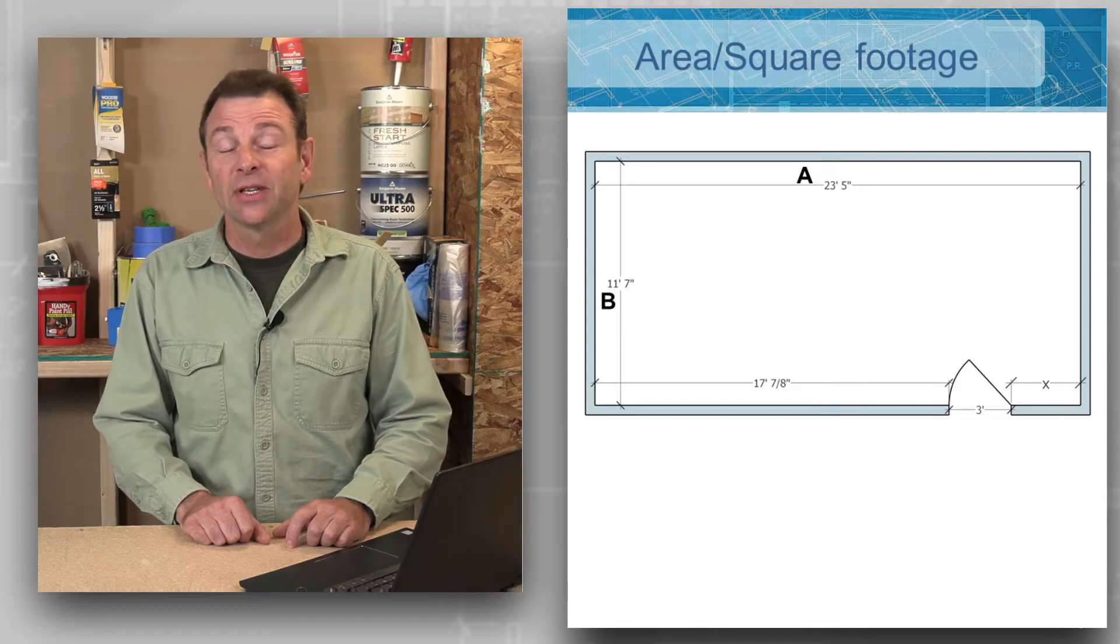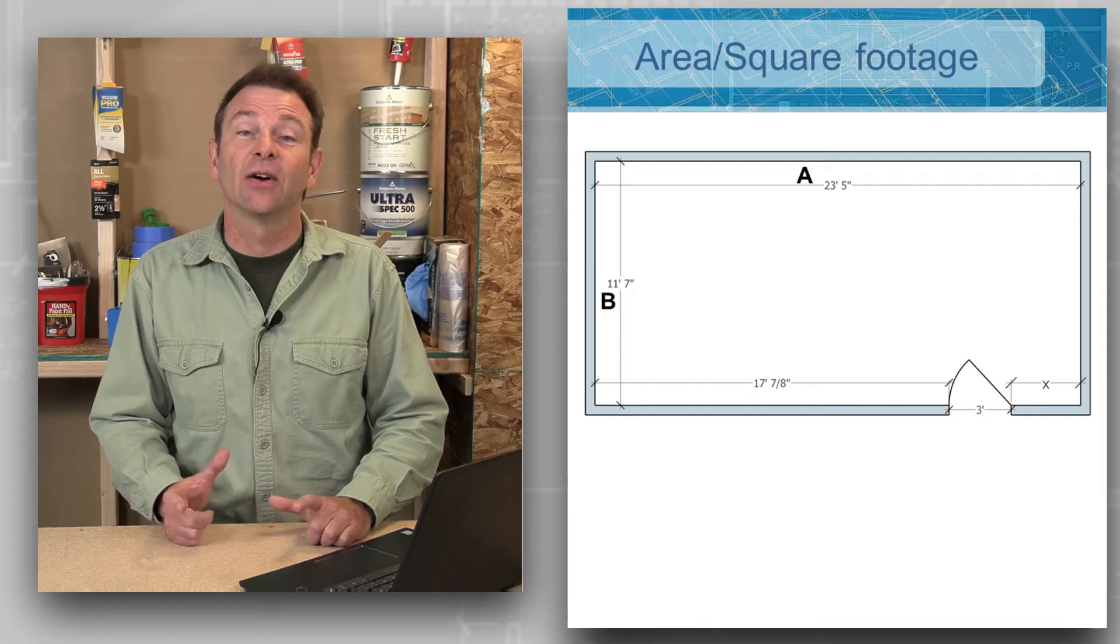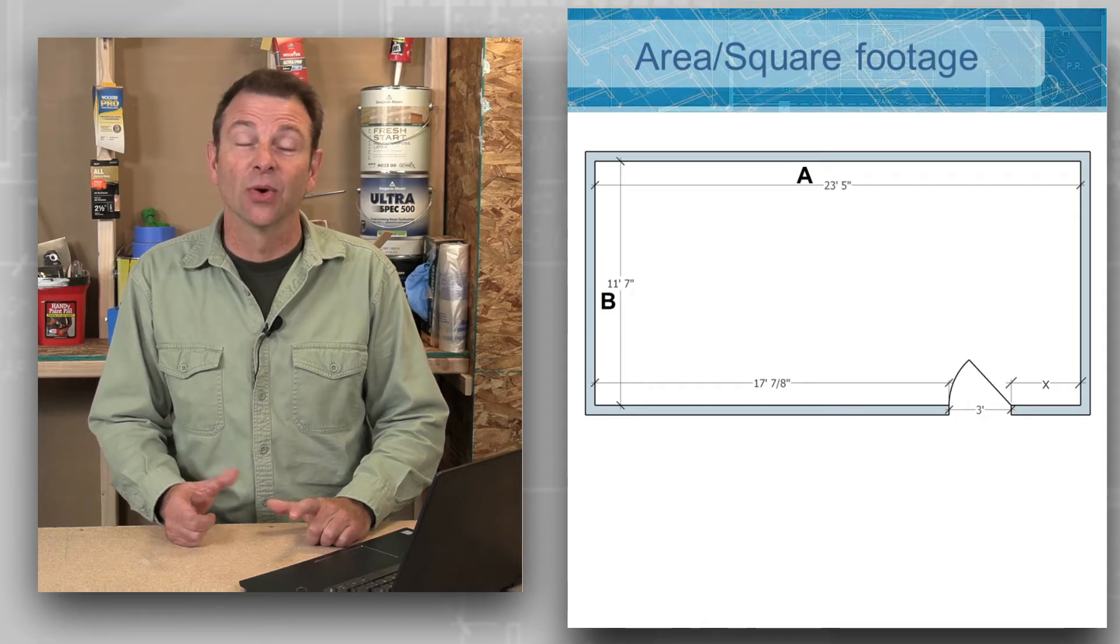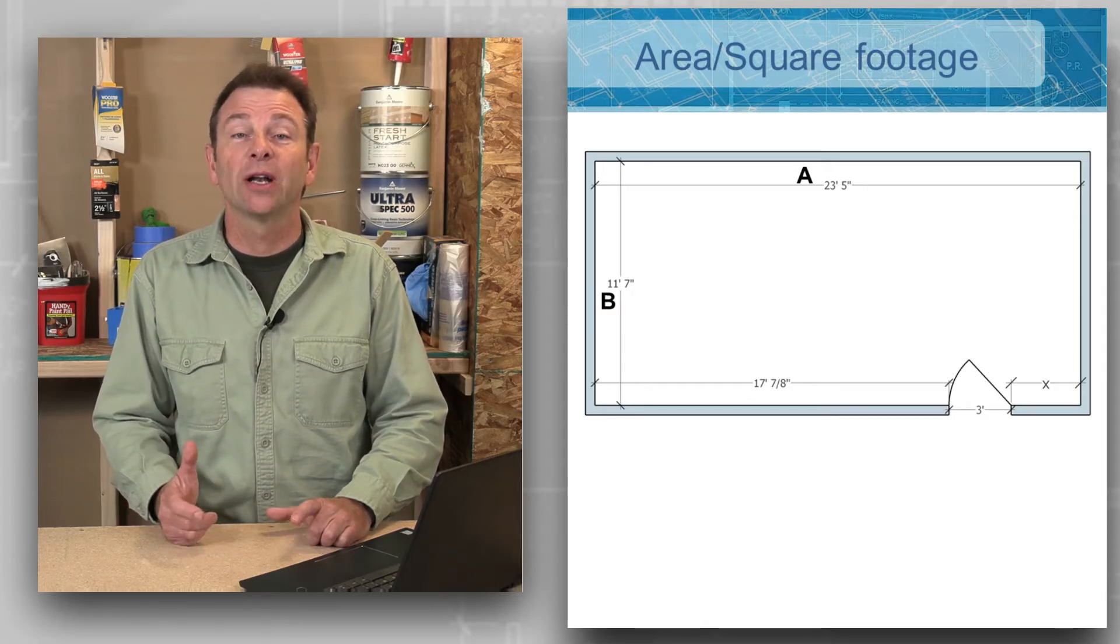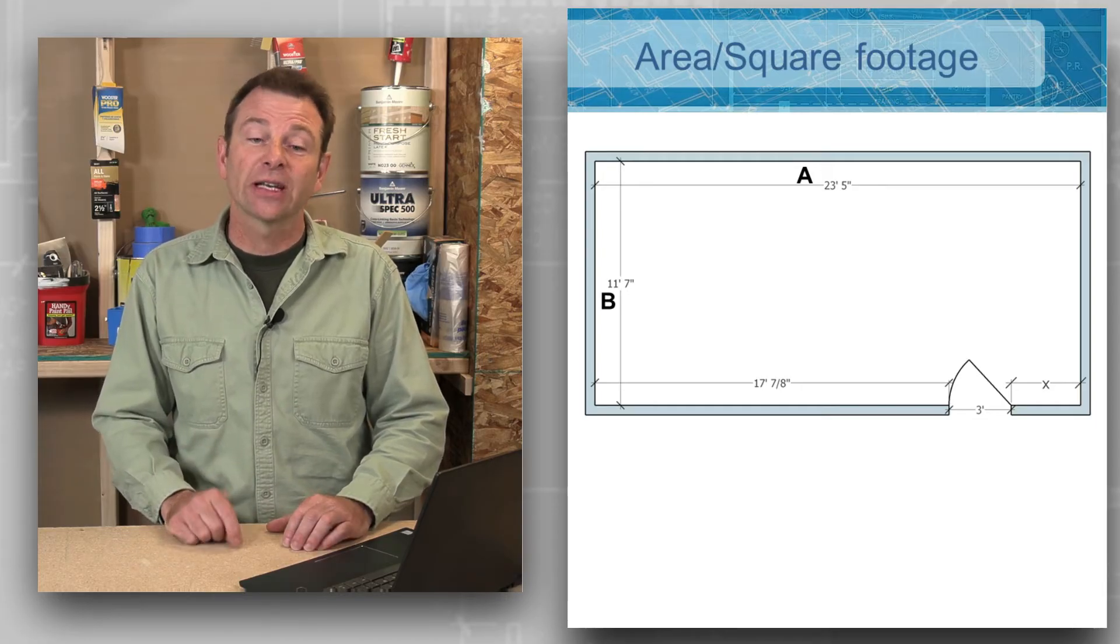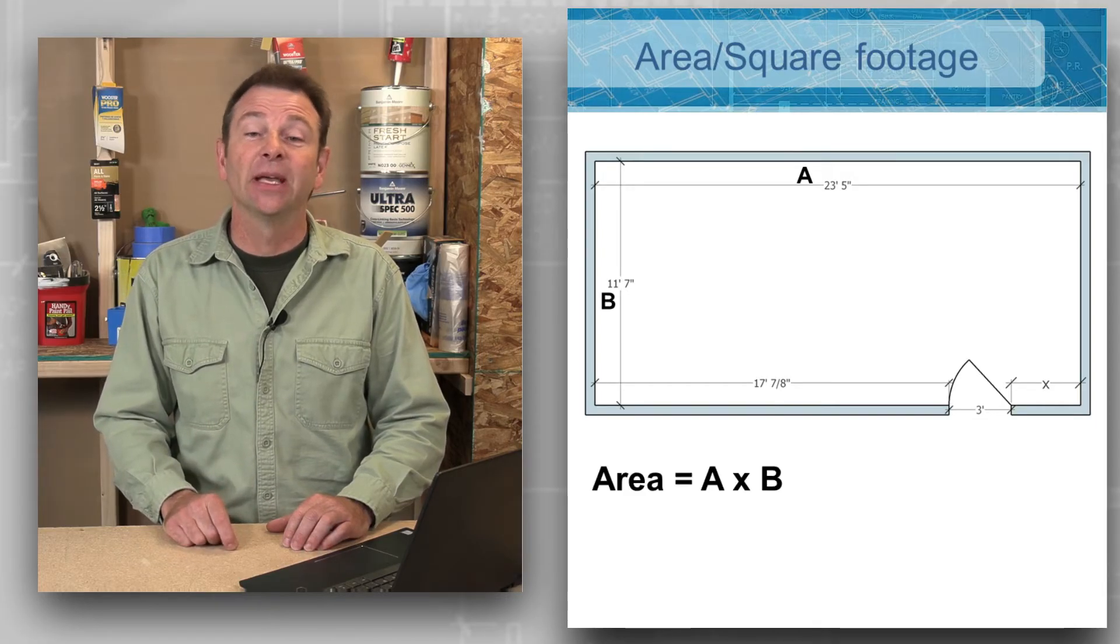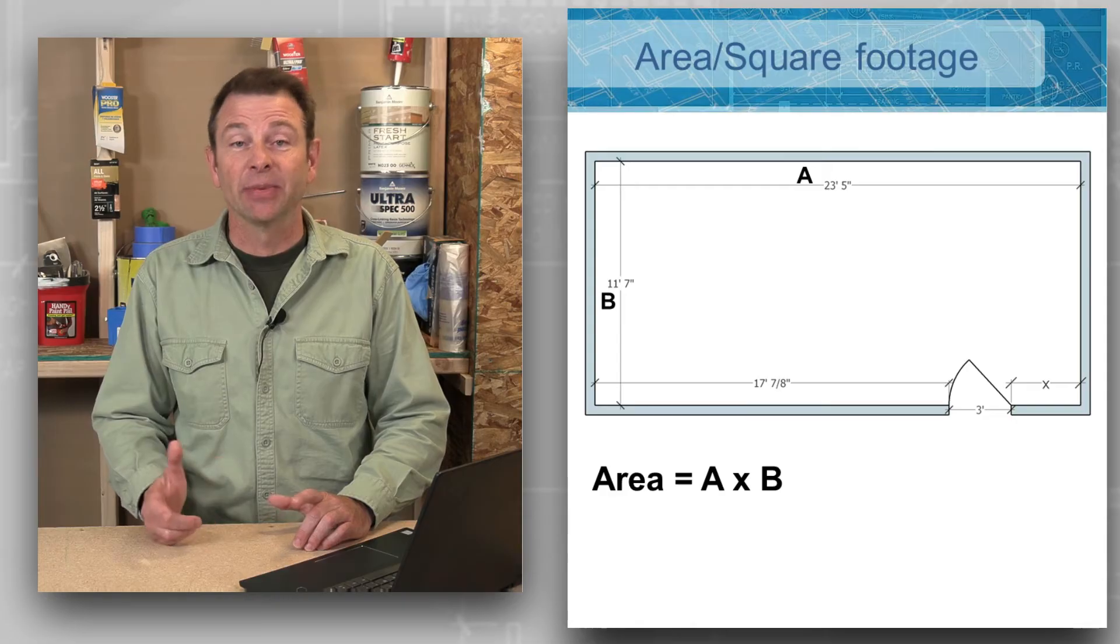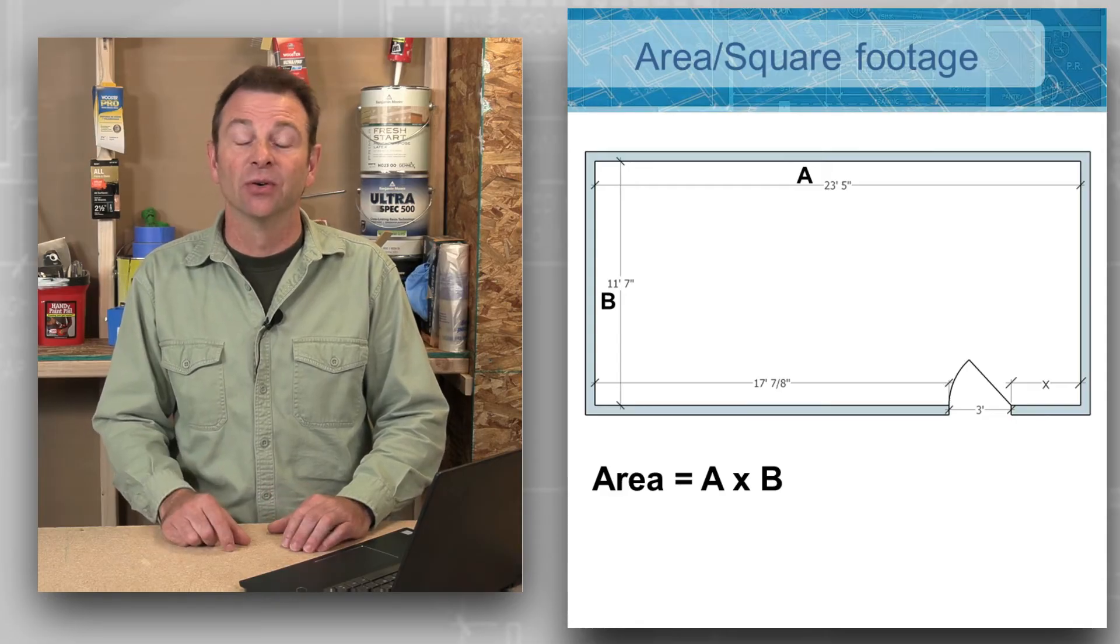Like the walls in our previous question, we often calculate our floors in square feet as well. Here we have a room and we want to know what the square footage is of this particular floor. So we're going to calculate the area, and that's going to be measurement A times measurement B, that would be length times width of this room.